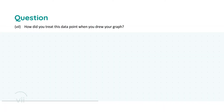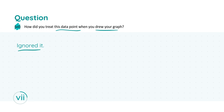Finally, part vii asks how we treated this inconsistent data point when drawing the graph. The answer is simply that we ignored it. When drawing a line of best fit we're looking for the best fit through all points, so if one is slightly off we don't need to force the line through it — we just ignore it. For stating this you get a total of four marks.